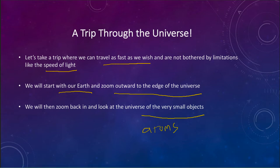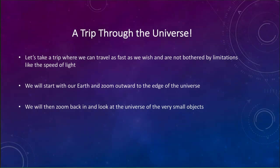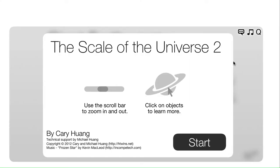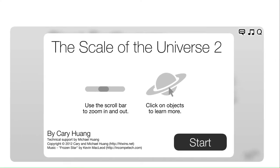We're going to use a website by Cary and Michael Huang that allows us to scroll through these different sizes. So let's take a look at their website on the scale of the universe and see some of the things that we need to see for an astronomy course. As we start, we'll see the website like this, the scale of the universe, and we'll be able to scroll in and out through things as we begin this tour.